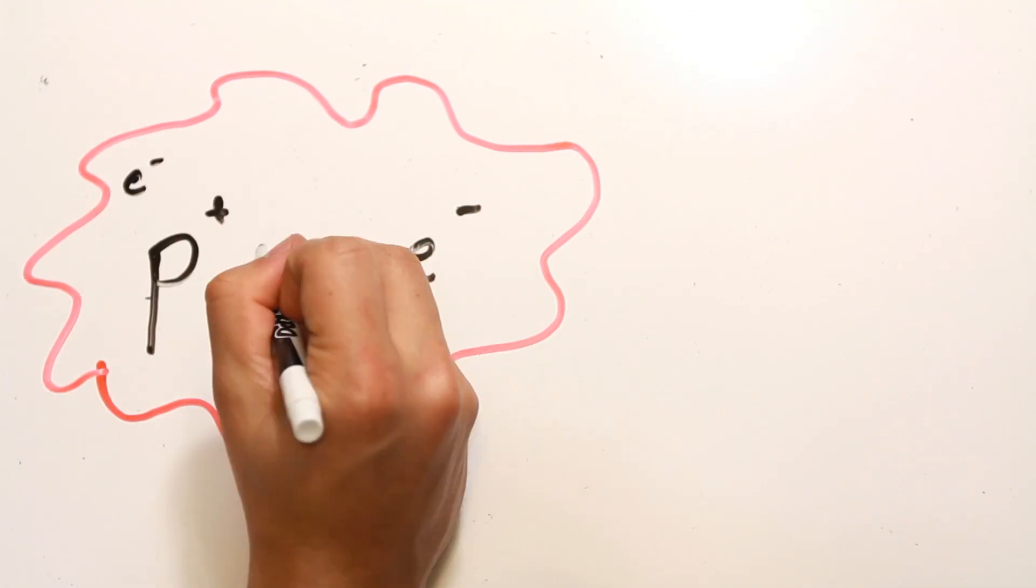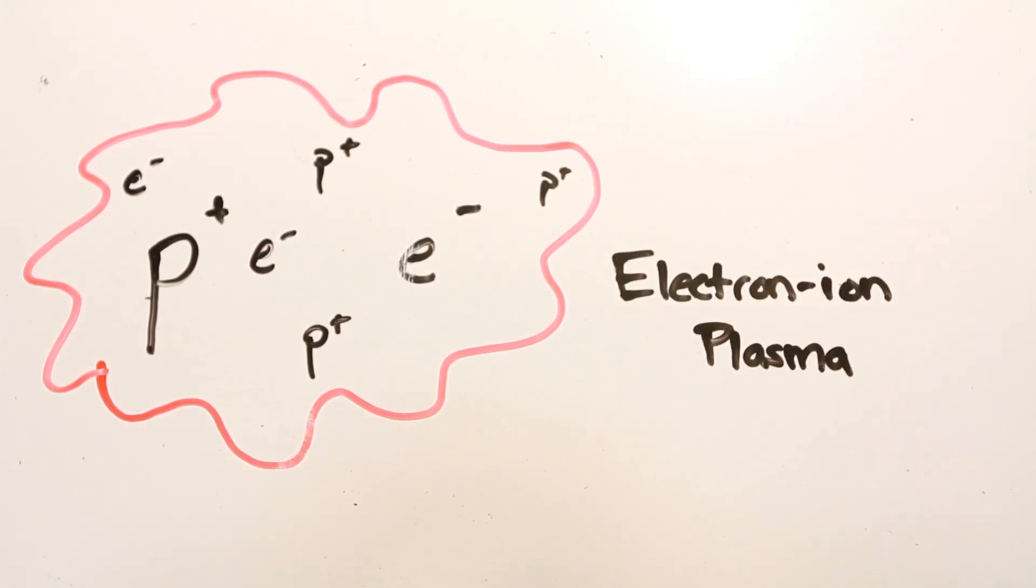Instead, it becomes a state of matter known as electron ion plasma. What's so special about plasma? Well, for one, it's opaque.